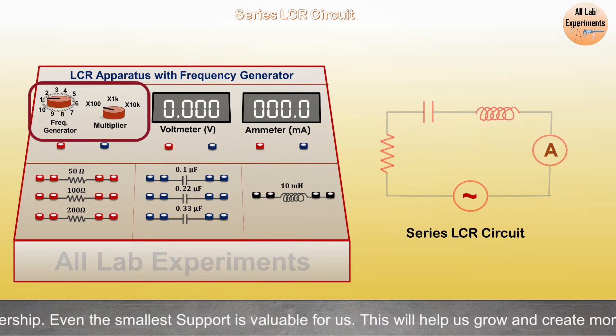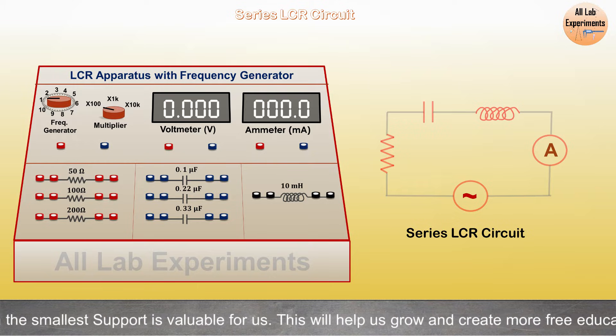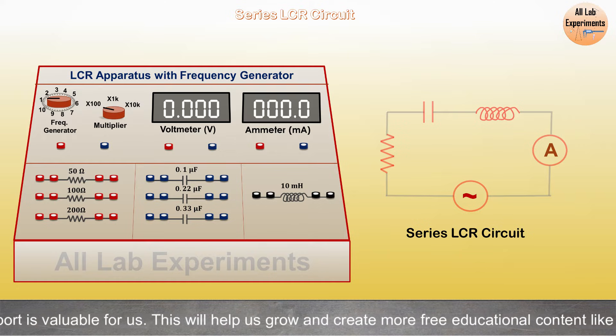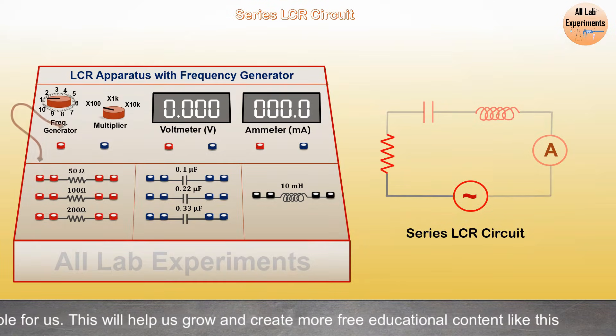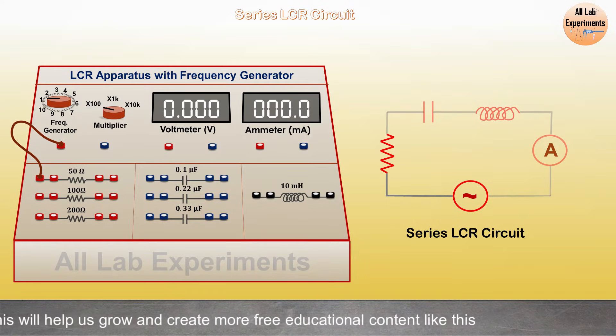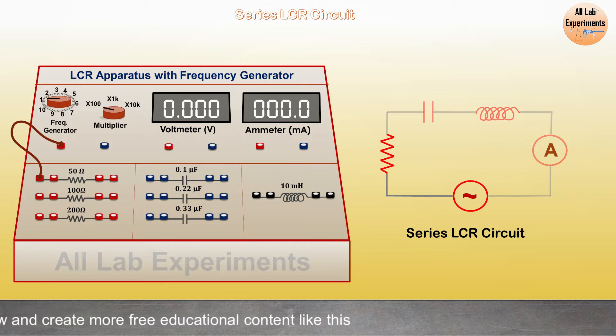First of all, let's connect one side of frequency generator to the resistor. We can see the wire we connected in the box has been highlighted in the circuit on the right hand side.